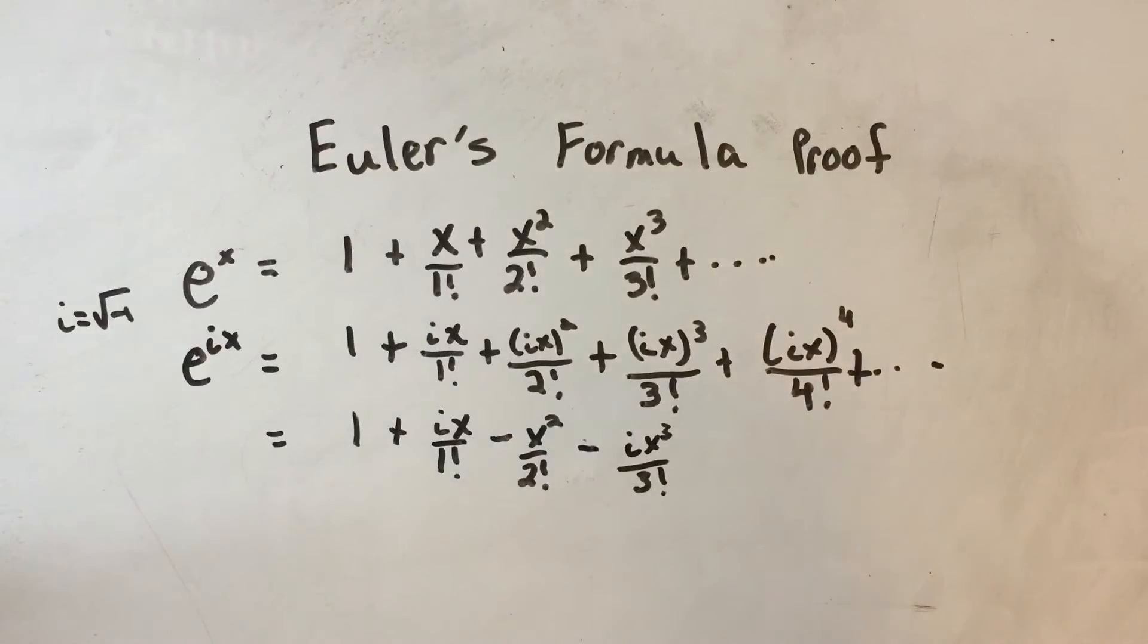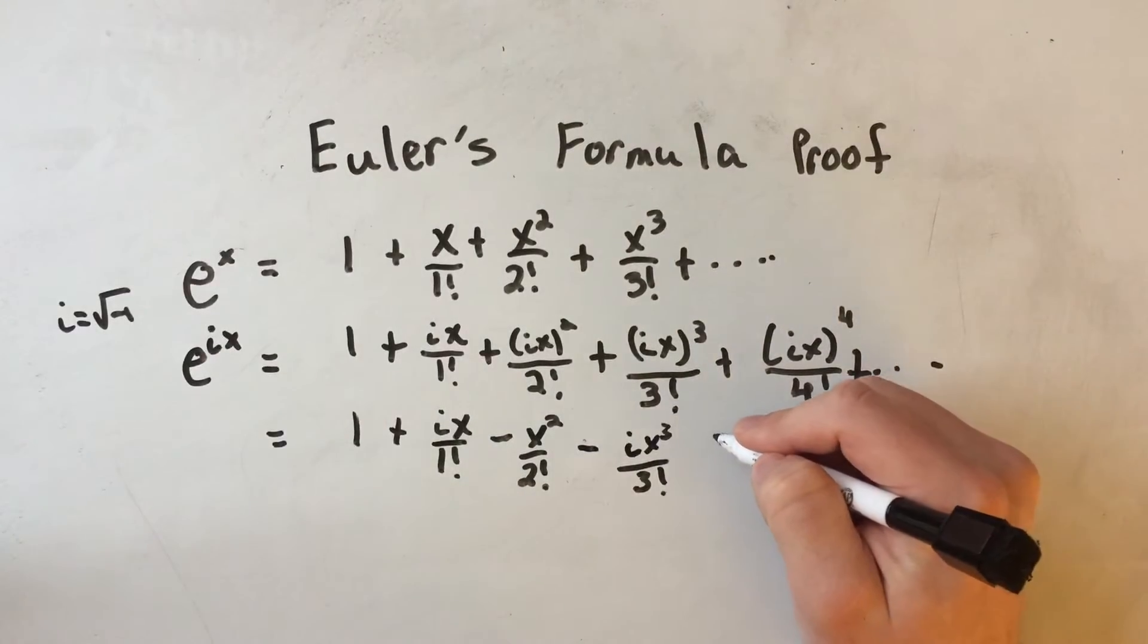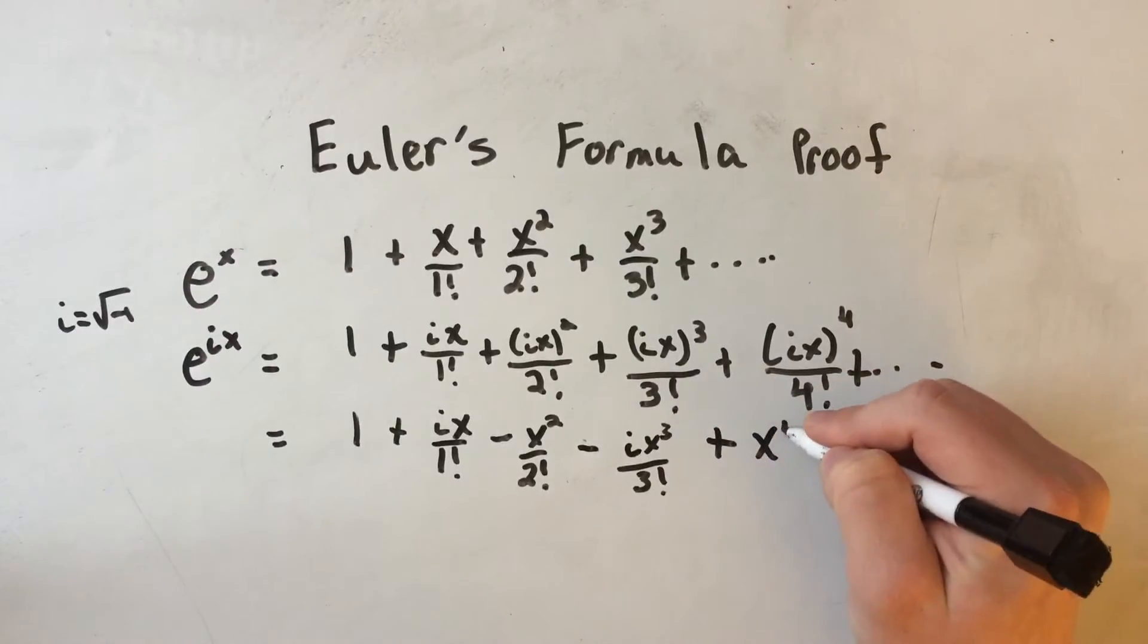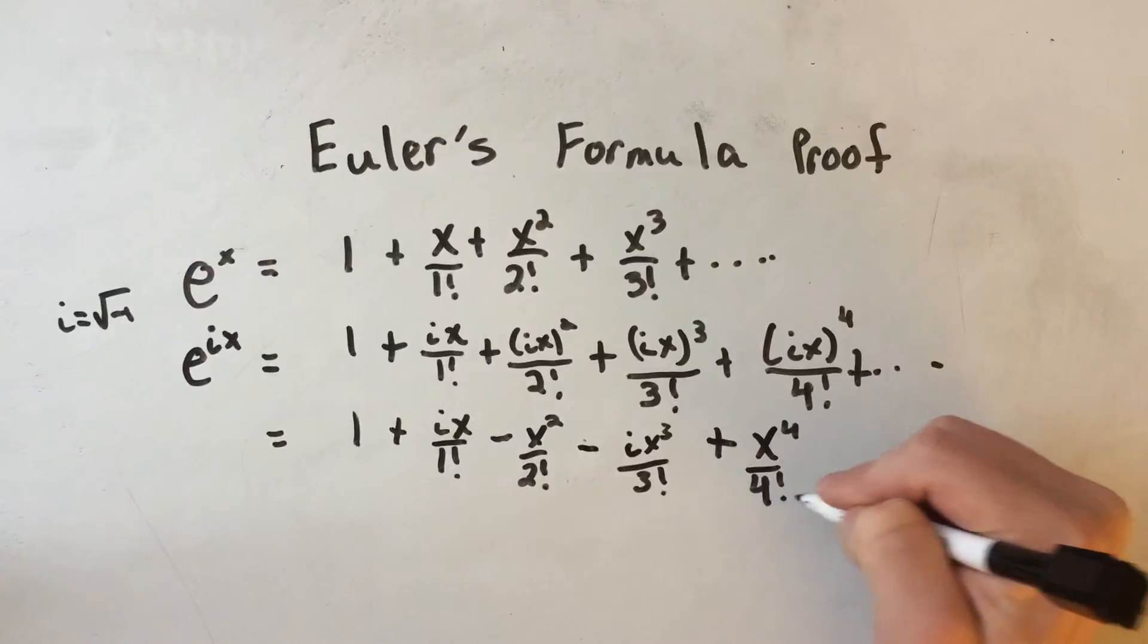And then i to the 4th, well that's like i squared times i squared, that's just gonna be a plus 1 x to the 4th over 4 factorial.